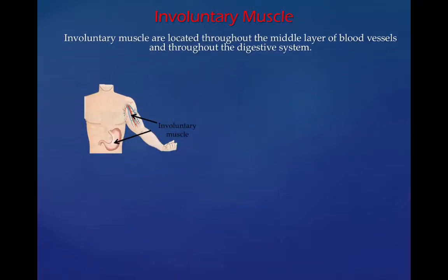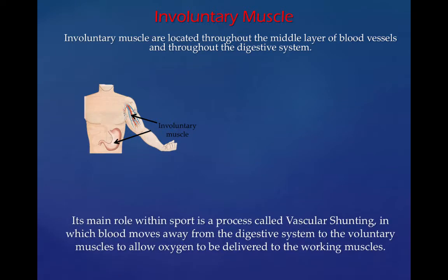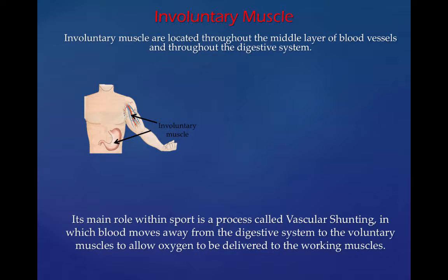Involuntary muscles are located throughout the middle layer of the blood vessels and throughout the digestive system, as you can see here in this diagram. They're part of your veins and your arteries and they're also part of your digestive system. Their main role within sports is a process called vascular shunting, in which blood moves away from the digestive system to the voluntary muscles to allow oxygen to be delivered to the working muscles.